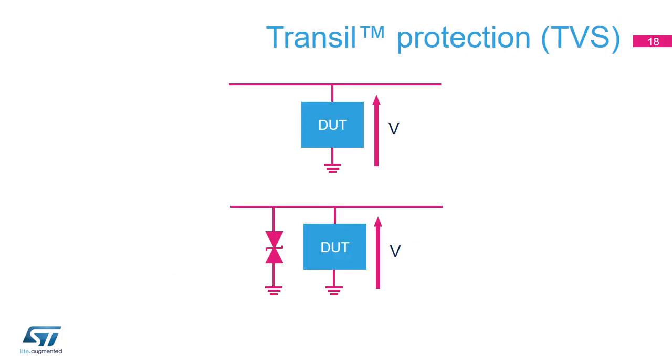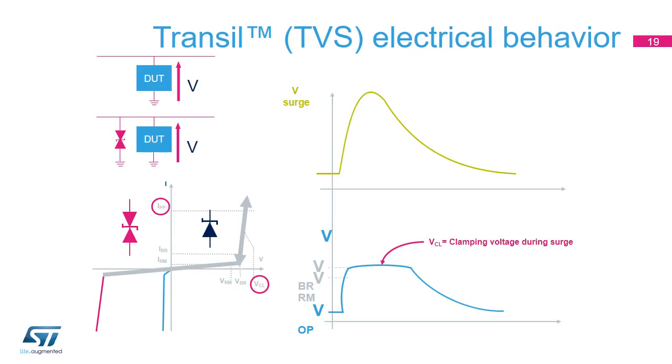Let's start with the transils, or transient voltage suppressors. In order to protect the DUT, the transil should be connected in parallel. Step by step, let's look at how the circuit with the transil is going to behave. When the voltage surges, the voltage across the protection and across the DUT increases. At some point, the voltage reaches a value called the breakdown voltage, or VBR. At this moment, the current flows through the protection because of the avalanche effect in the diode.